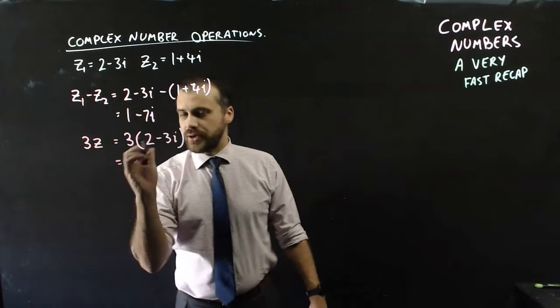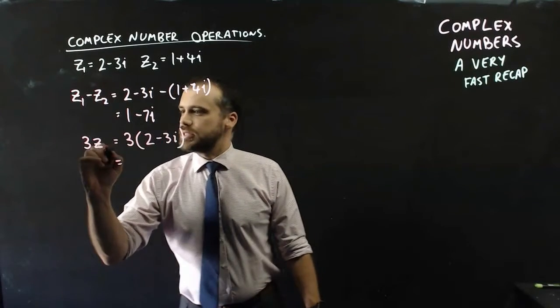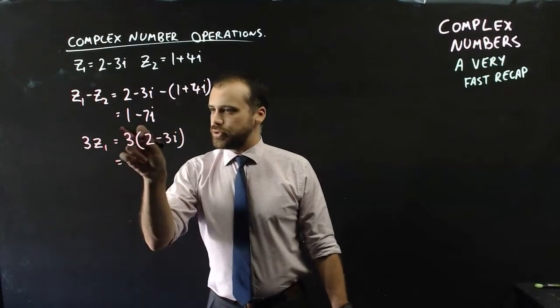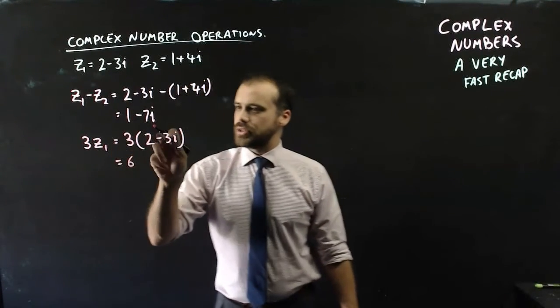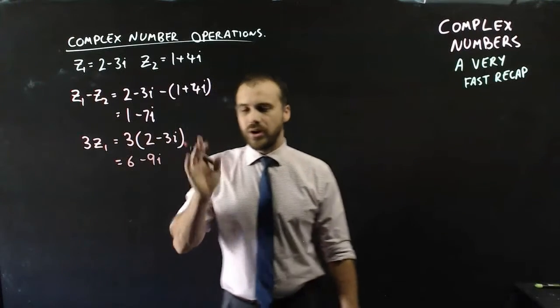Multiplication by a scalar works exactly how you imagine it would. 3 times z1 is equal to 3 times 2, which is 6, and 3 times negative 3i, which is negative 9i.